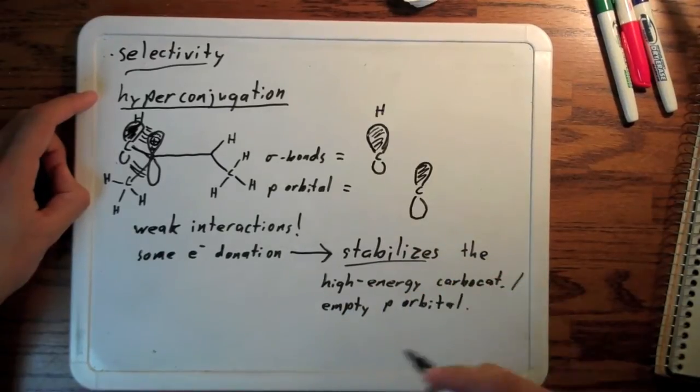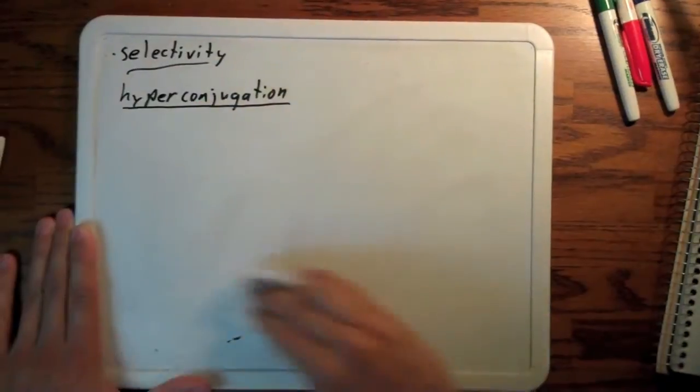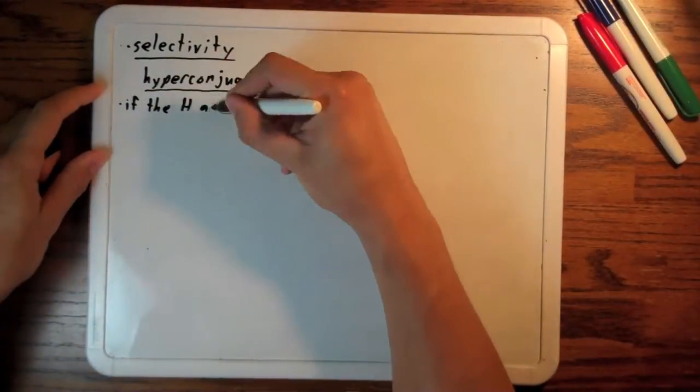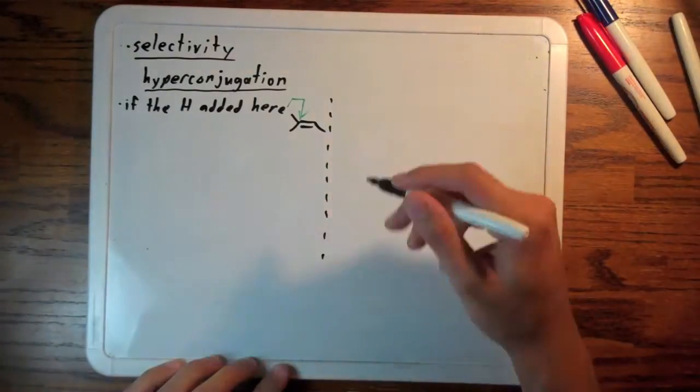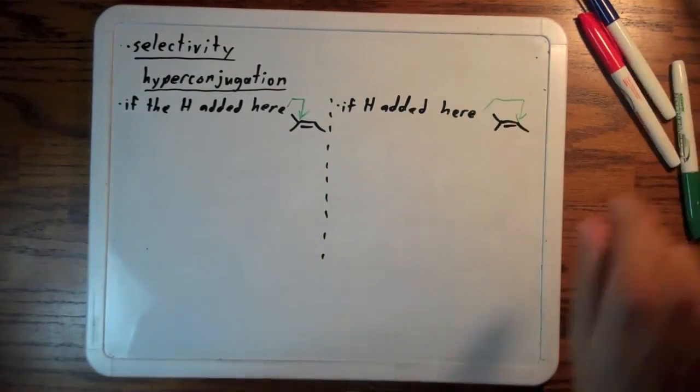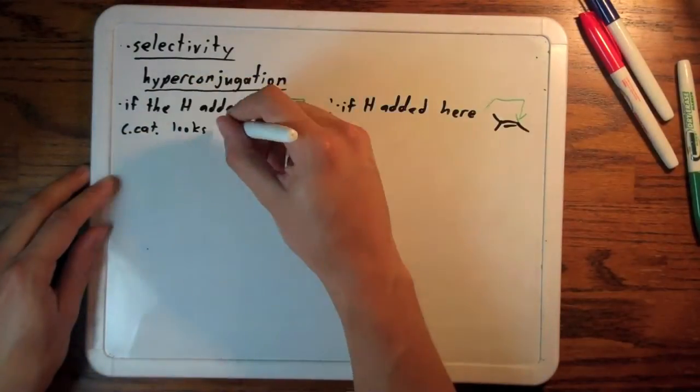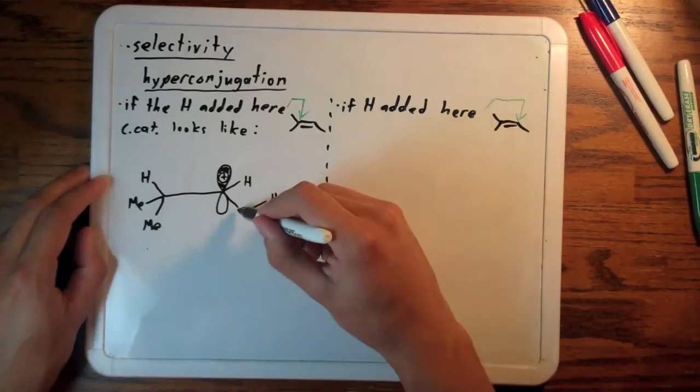So with all of that in mind, let's look again back to our asymmetrical alkene. We're going to look at what if the H added to one side and then what if the H added to the other side. In the first case, the carbocation would look something like this.